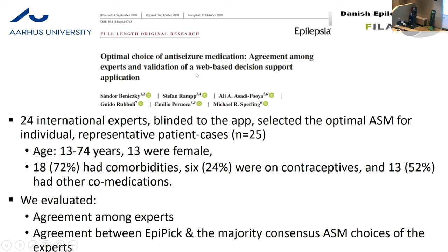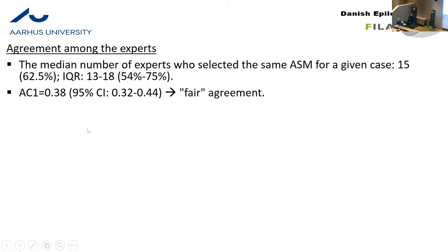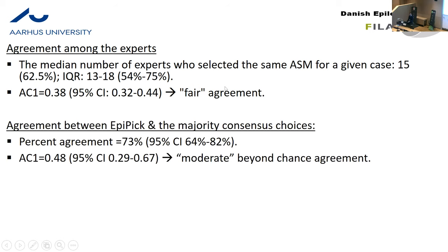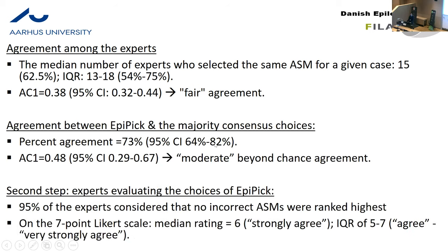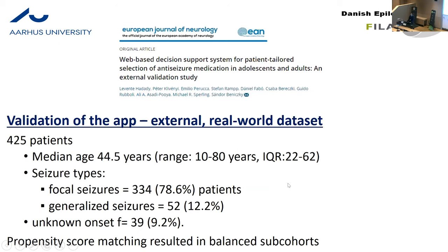We tested the algorithm's ability to recommend the best anti-seizure medication using 25 representative patient cases shown to 24 international heavyweight experts — key opinion leaders in the field. We compared the experts' choices with the algorithm's choices. Interestingly, the inter-expert agreement was only fair — the experts did not really agree with each other. The algorithm was closer to the consensus majority expert choices than the individual experts were. When we showed all algorithm choices to the experts, they strongly agreed with what the algorithm did.